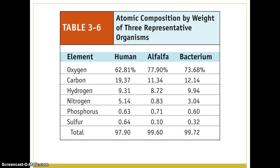Across planet Earth, there are 103 known elements, with 92 of those occurring naturally. Nearly a quarter of the known elements — 24 elements — are required for life processes. We break these down into macronutrients, in which large amounts are needed by all life, and micronutrients, in which small amounts are needed by all life, or moderate amounts are needed by some life.